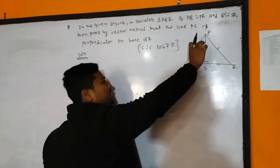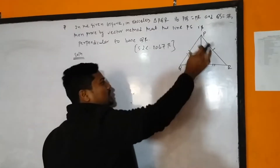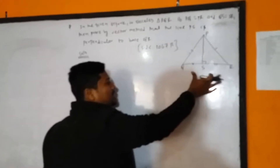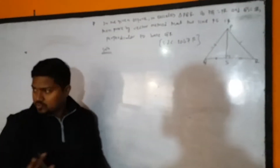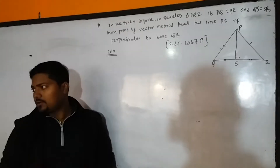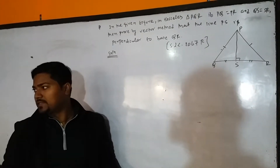PS perpendicular to QR means what? PS vector dot QR vector is equal to 0. If we can show this, then we can prove it in this way.